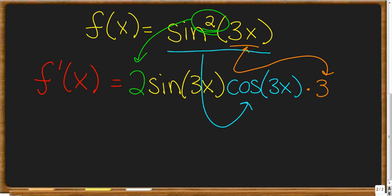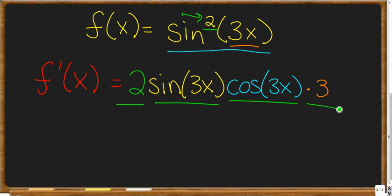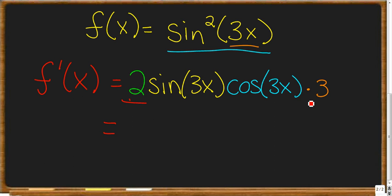We're not done because we have to simplify. The derivative of sine squared of 3x is: 2 — which comes from the power rule — times the sine of 3x, times the derivative of sine of 3x which is cosine of 3x, times 3. You can see color-coded where all of this comes from. When we simplify: the 2 times 3 gives us 6, and we then have 6 times sine of 3x times cosine of 3x.